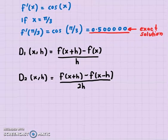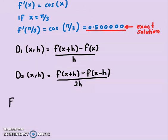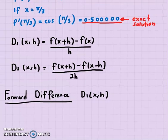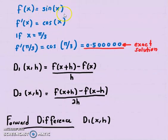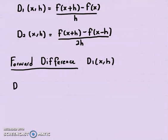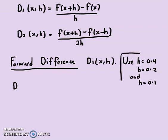Let's focus first on using D1, the forward difference method, to find the derivative D1(x, H). We want to find the derivative of F(x) = sin(x) using the D1 formula. We will use H = 0.4, H = 0.2, and H = 0.1, and see how close the approximation gets to the exact solution.